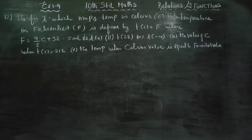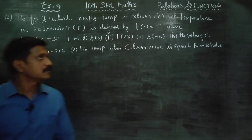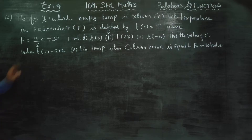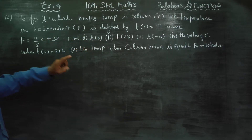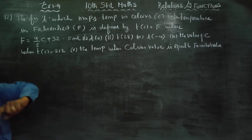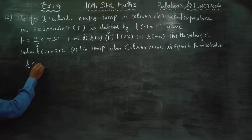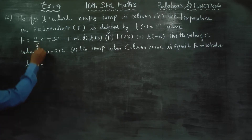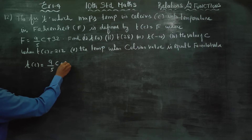Dear 10th standard students, I am Etro Karanagaran. In exercise number 1.4, sum number 12, the function T which maps the temperature in Celsius into temperature in Fahrenheit is defined by T of C is equal to F, where T of C is equal to 9 by 5 C plus 32.